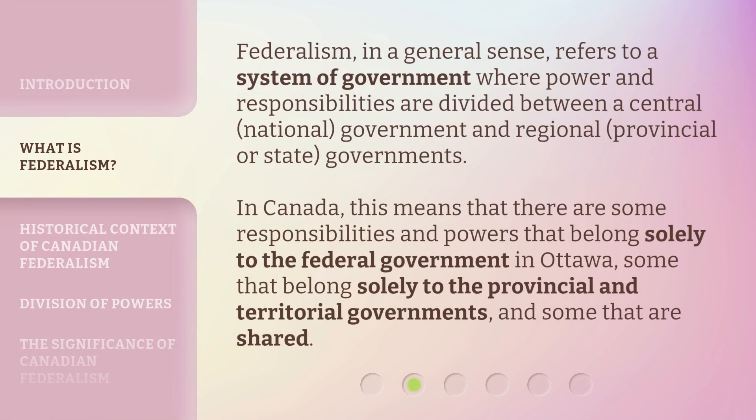Federalism, in a general sense, refers to a system of government where power and responsibilities are divided between a central, national government and regional, provincial or state, governments. In Canada, this means that there are some responsibilities and powers that belong solely to the federal government in Ottawa, some that belong solely to the provincial and territorial governments, and some that are shared.